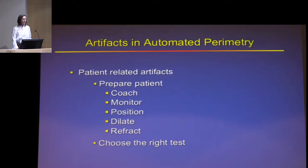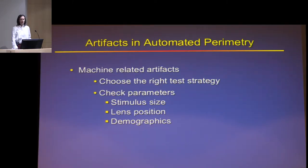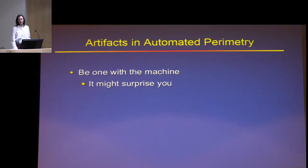In summary for automated perimetry artifacts: patient-related artifacts require you to prepare the patient, coach them, monitor them, position them, dilate them, refract them, take care of their ptosis, and choose the right test. Machine-related artifacts require you to choose the right test strategy, check the parameters and demographics, verify lens position and stimulus size. Be one with the machine — really understand how the test works. I encourage everybody to actually have a visual field done on themselves, because it's a very interesting and somewhat unpleasant experience.